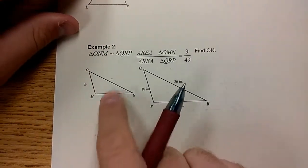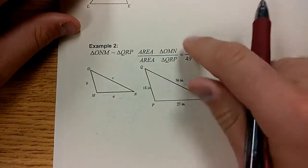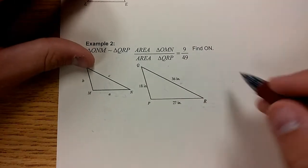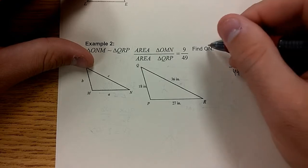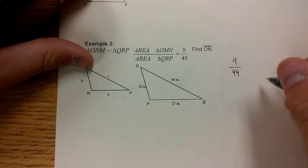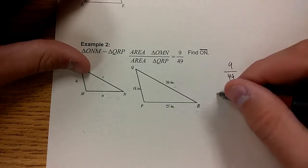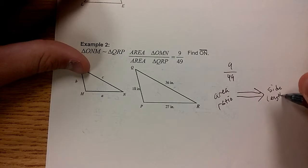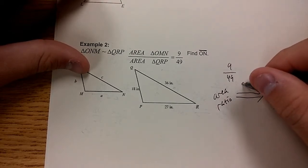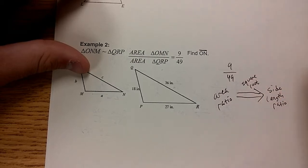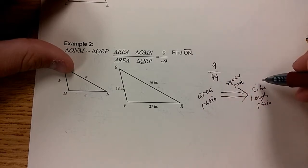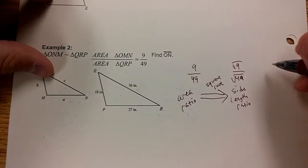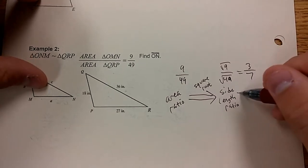Example 2 here says two triangles are similar, ONM and QRP. And they give you the area ratio of each, 9 over 49. Not necessarily the areas, but that's the area ratio. Take this area ratio. Since you're asked to find ON, the side length, you need to create a side length ratio from this area ratio. This is an area ratio. You want to go to a side length ratio. In order to do that, you need to do the inverse of squaring: square root. Square root this ratio to turn it into a side length ratio. 9 and 49 both get square rooted. Ends up being 3 over 7. This is your side length ratio.